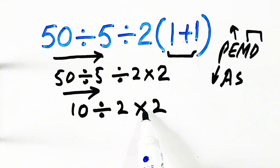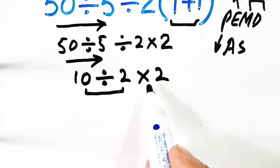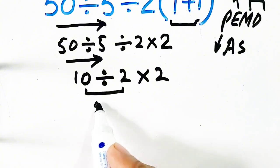Now, again, it has division and multiplication, so first of all we have to handle division because it is at left and multiplication is at right. So, 10 divided by 2 will be equal to 5 times 2.